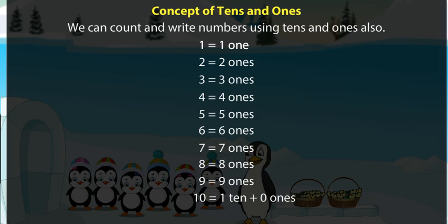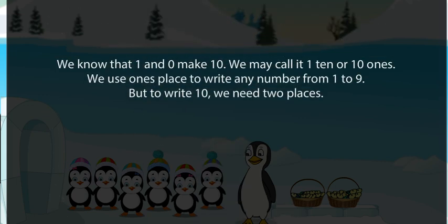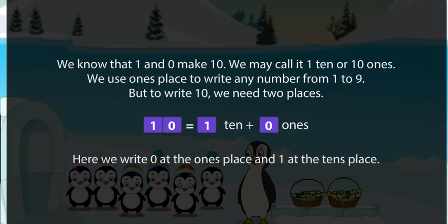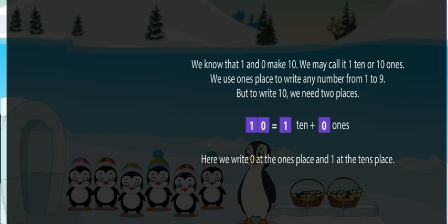Ten is equal to one ten plus zero ones. Ten is equal to one ten or ten ones. We know that one and zero make ten. We may call it one ten or ten ones. We use the ones place to write any number from one to nine, but to write ten we need two places. Ten is equal to one ten plus zero ones. Here, we write zero at the ones place and one at the tens place.